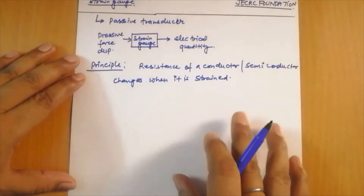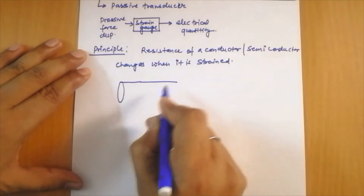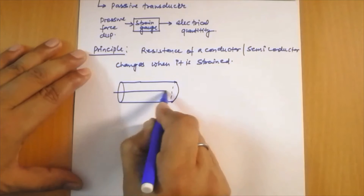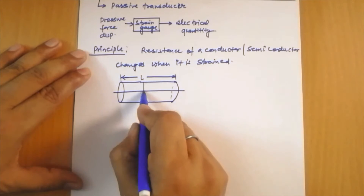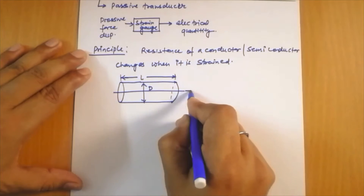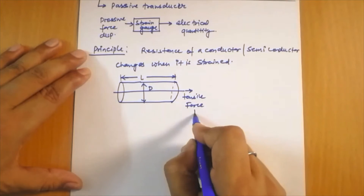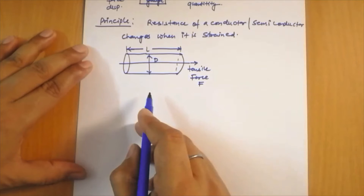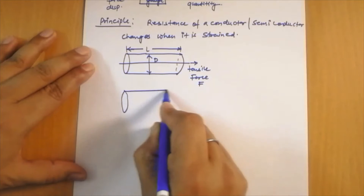Let us take one example of a conductor wire in the form of a cylindrical shape. The initial length of this wire is L and the initial diameter is D. Suppose a tensile force F is applied along the length. Then the length of the wire will increase and the diameter will decrease.